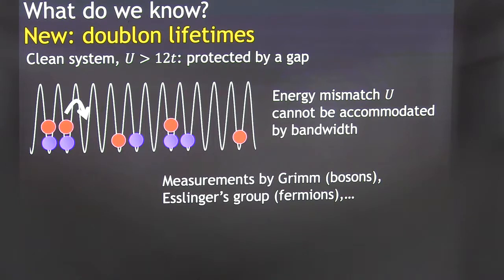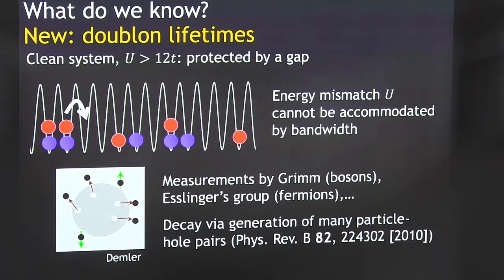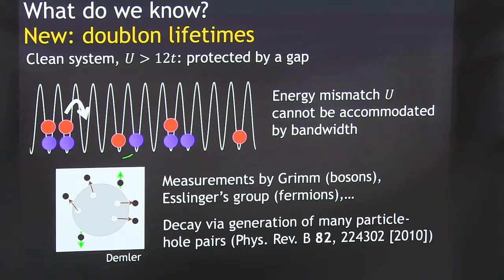This was first measured by Greiner's group using bosons, which is basically the same phenomenon, and by Strohmaier's group with fermions, and many other people have measured this effect. There's been some theory work on this — these doublecons do decay, they just decay with a very long lifetime. The current theoretical understanding is they decay via generation of many particle-hole pairs: many interaction vertices are involved, you need this background of singly-occupied sites and empty sites, and basically this doubleon by shedding many excitations through many interaction vertices can decay, just with a long lifetime. So that's what happens in the clean system.